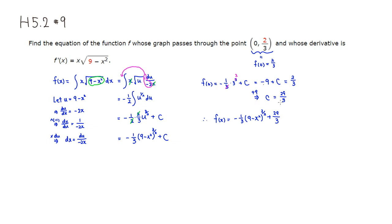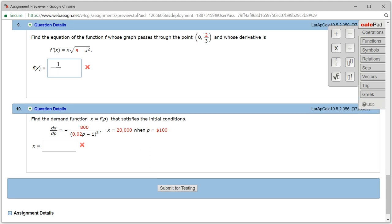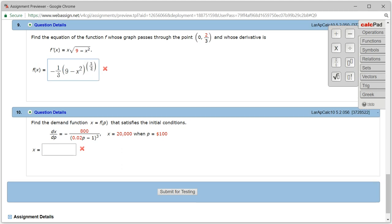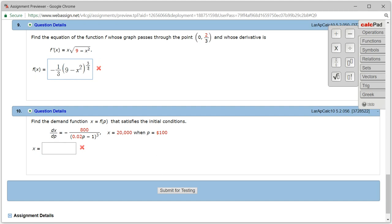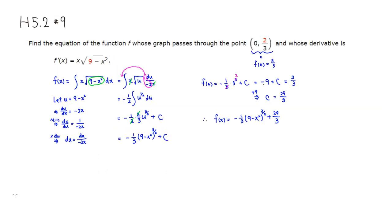So let's type it in. All right, so we have negative 1 third, quantity 9 minus x squared, raise it to the 3 halves power. Let's see. I'm going to get rid of that. And plus 29 over 3. So let's check the answer. All right, it came back and looks like we got this one correctly. All right, that's it. I hope that this was clear.